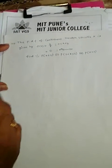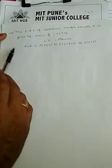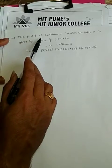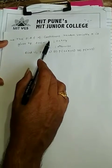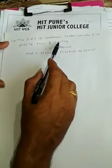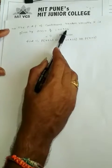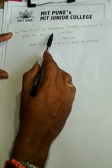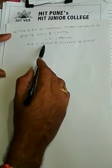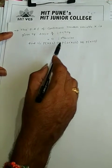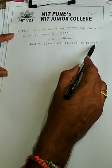Dear students, here I have one more problem based on probability density function. The probability density function of continuous random variable x is given by f(x) = x/8 for 0 < x < 4, and f(x) = 0 for all other cases. Now find: P(X ≤ 2), P(2 < X ≤ 3), and P(X > 3).